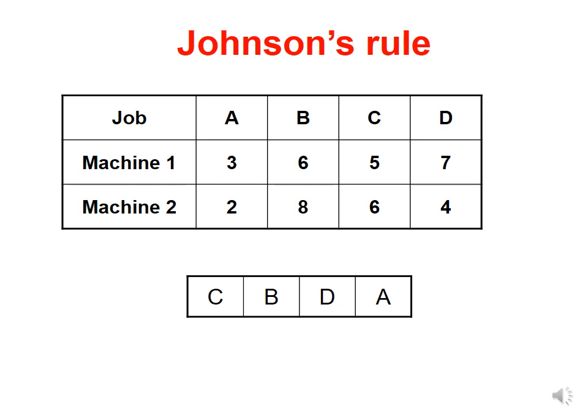Looking at remaining jobs B, C, and D, the shortest activity time is four on machine two for job D. We place job D at the end of the sequence before A and eliminate it. Of the remaining jobs B and C, job C has the shortest activity time on machine one, so we place it first in the sequence and eliminate it. Job B goes in the center.